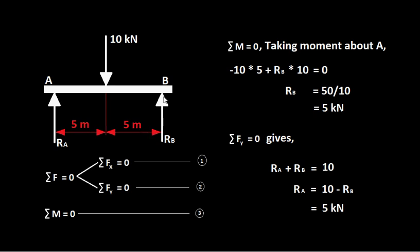The third force is RB. From the figure, RB creates a counterclockwise moment about point A — it pushes the beam upward, rotating it counterclockwise — so its moment is positive. The perpendicular distance is 10 meters. The total moment equation is: minus 10 × 5 + RB × 10 = 0. There is no moment for RA about A since RA passes through point A. Solving gives RB = 50 ÷ 10 = 5 kilo Newton.